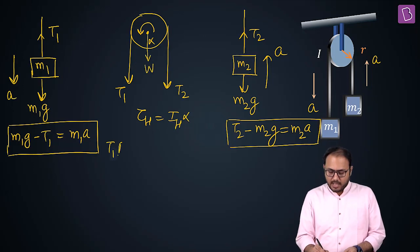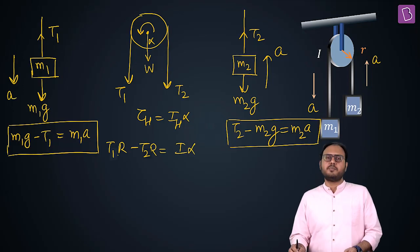So, T1R, the radius of the pulley, minus T2R is equal to I alpha. Is this equation perfectly correct, sir? Absolutely correct. And since there is no slipping, A is equal to alpha R.